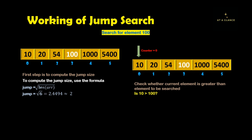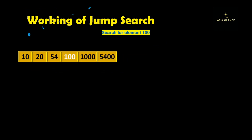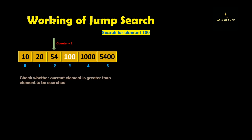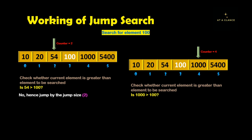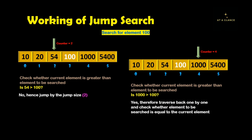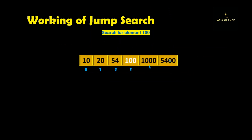Next step is to check whether the current element is greater than the element to be searched, which is 100. The current element 10 is not greater than 100, so we jump by the jump size of 2 steps. Starting from counter 0, after jumping 2 steps we are now at counter 2, so the current element is 54. Since 54 is not greater than 100, we jump again — counter becomes 2 plus 2, which is 4. The current element at counter 4 is 1000, which is greater than 100, so we need to move backward one by one.